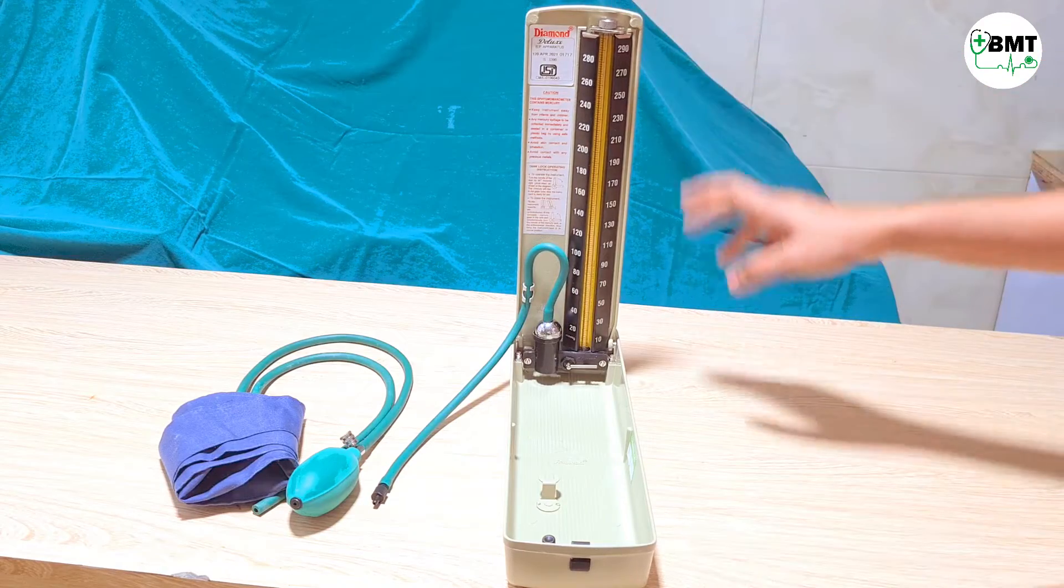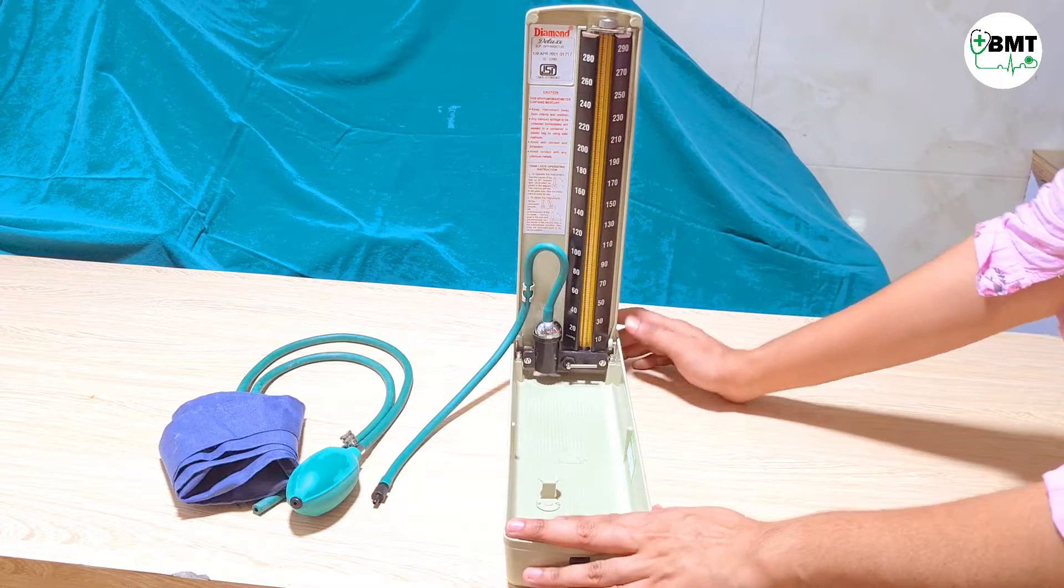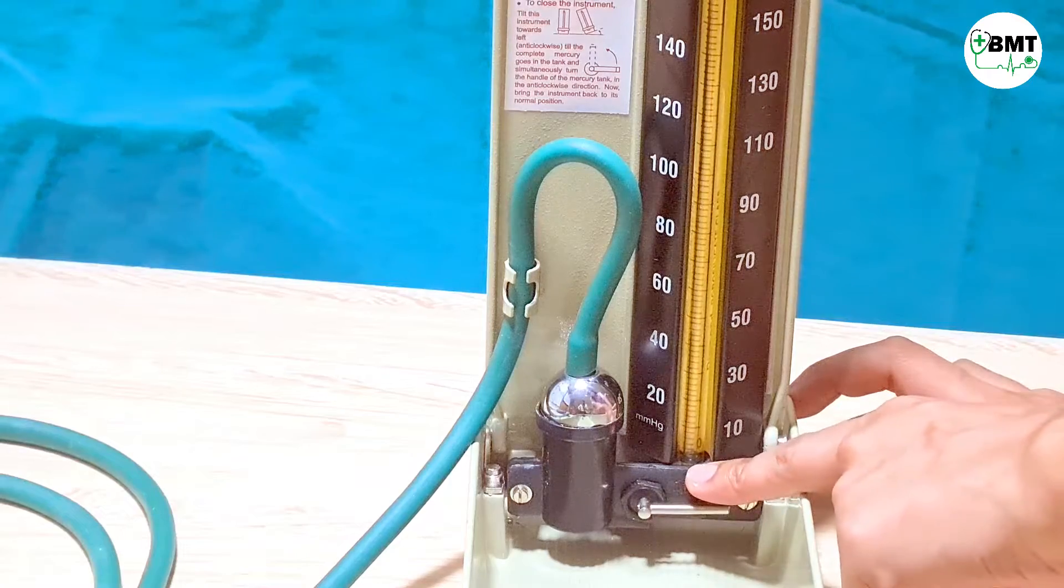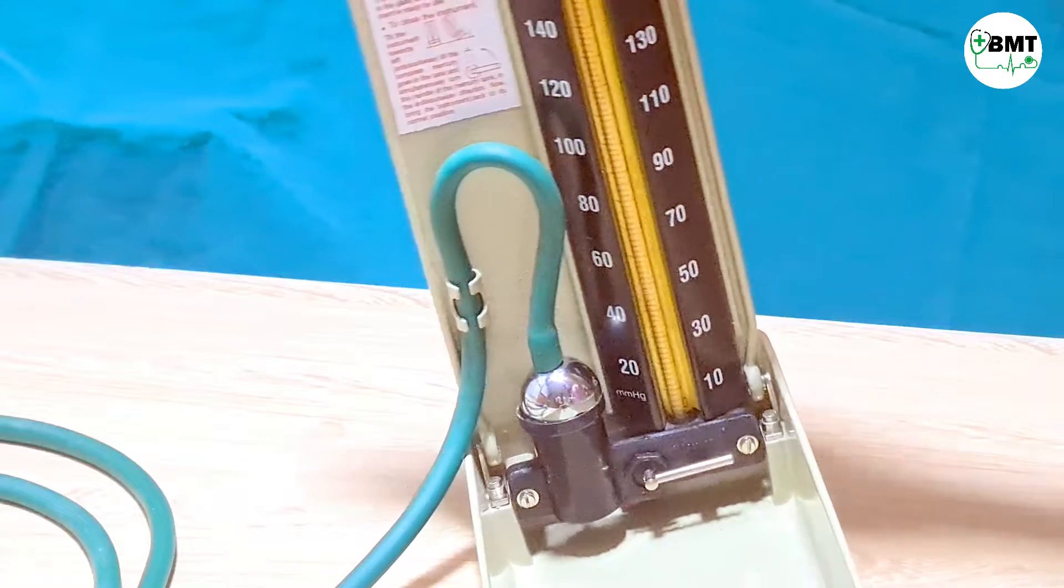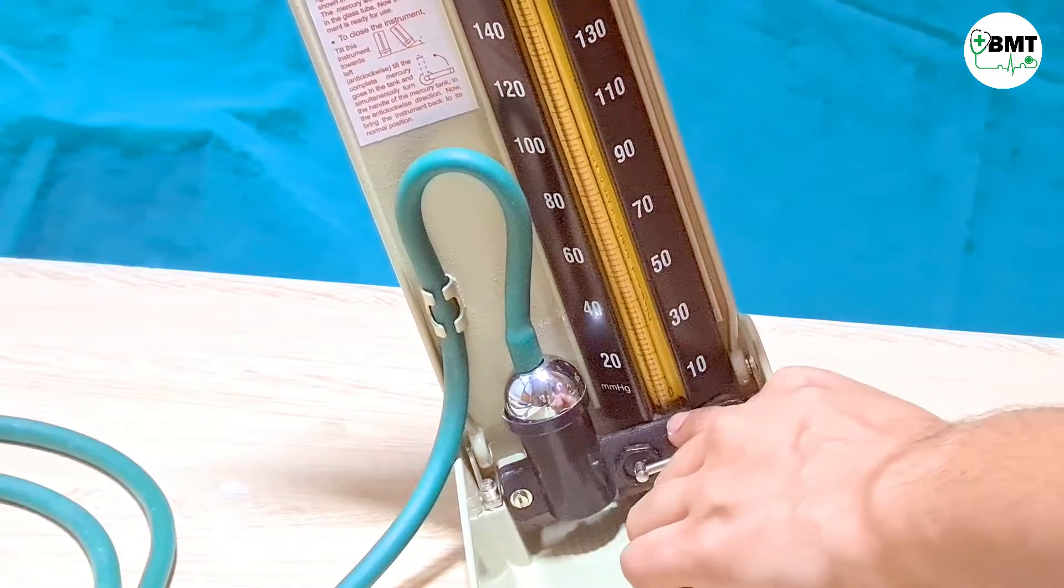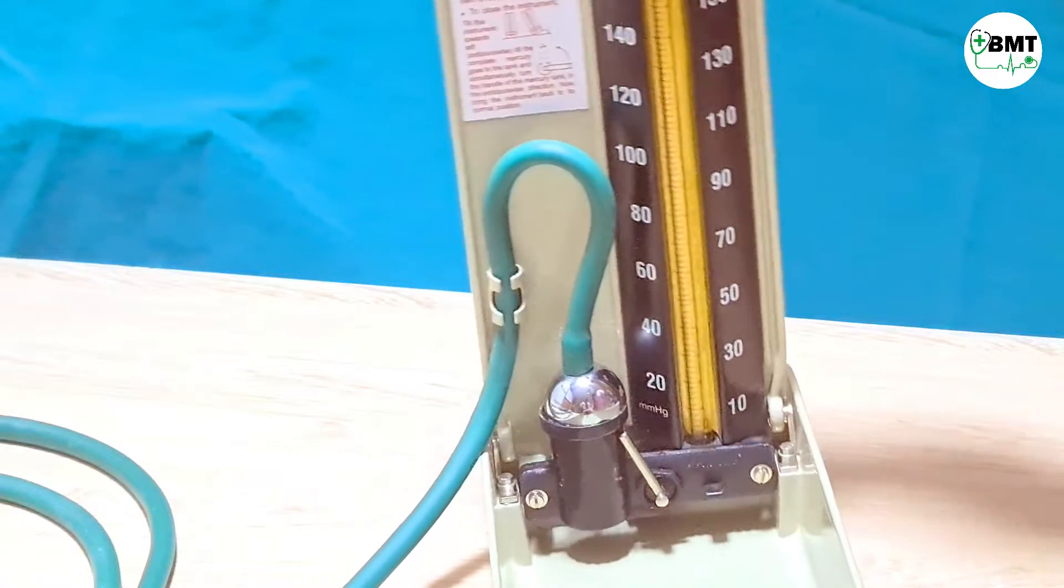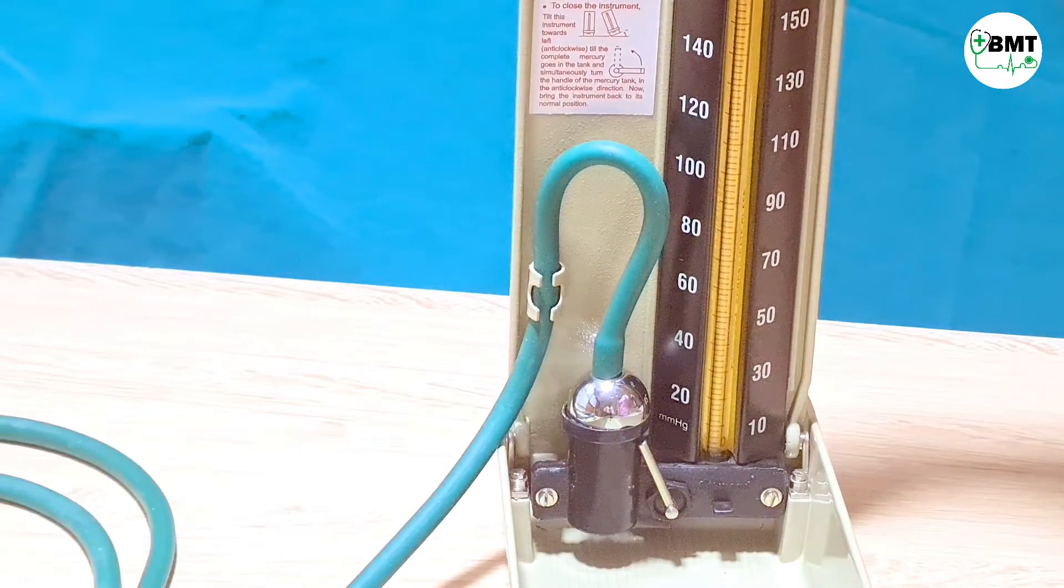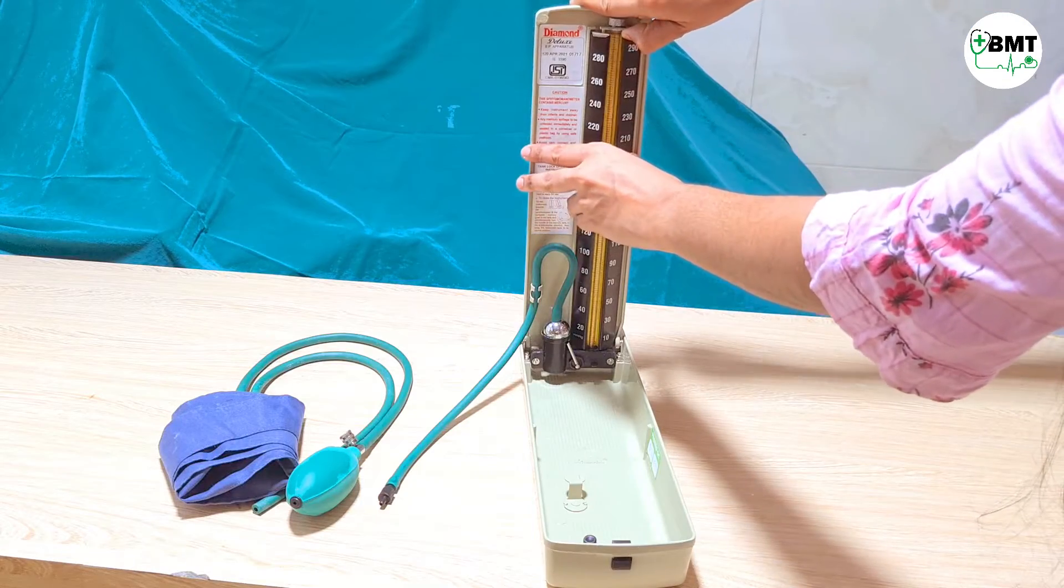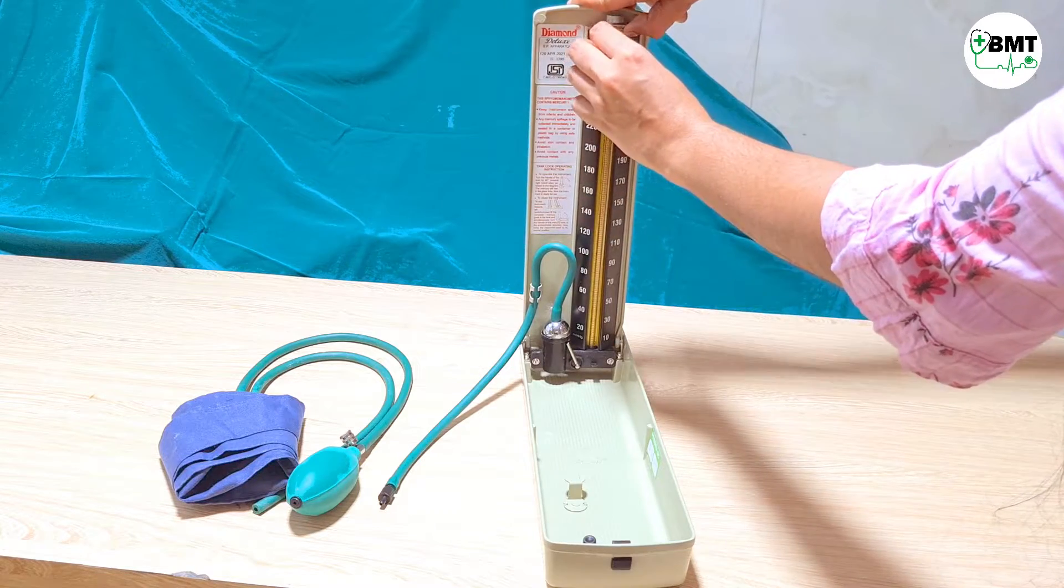Now let us see the simplest method of calibrating this BP apparatus. First, as you can see mercury over here, fill it so you will not see mercury over here. Now lock this. The mercury has been locked. Now pull it up and remove the tube.